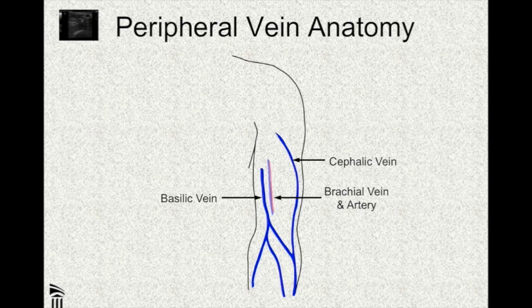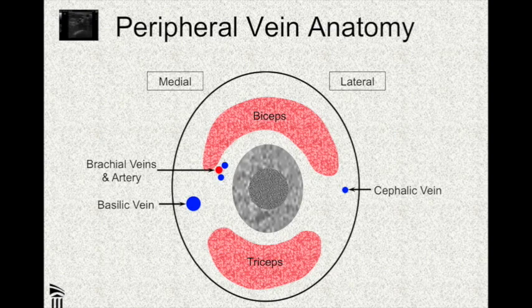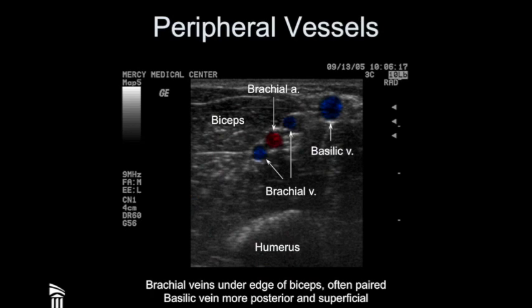Let's talk about peripheral access specifically. The veins you're going to look for are the basilic vein, the brachial vein, and the cephalic vein. The basilic vein is your main target — it's medial, fairly superficial, and quite large. The brachial veins, by contrast, are deeper, run with the artery, are smaller, and are often paired. The cephalic vein is on the lateral aspect of the arm — it's sometimes not there, and when it is, it's small and can be very hard to find. You'll find the brachials just deep to the medial edge of the biceps muscle.